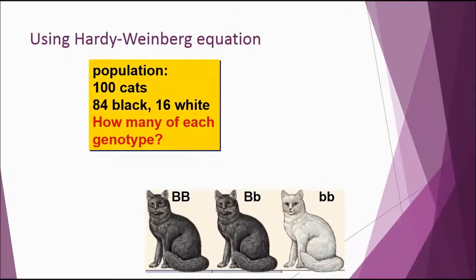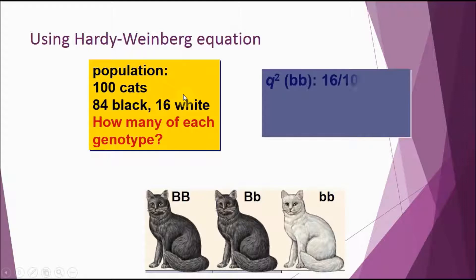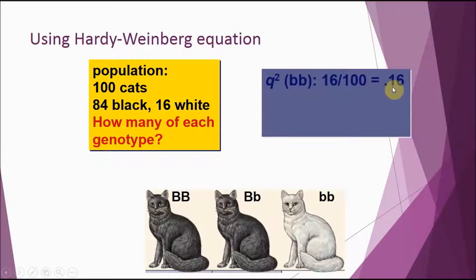Let's take a look at this example: in a population of 100 cats there are 84 black and 16 white. We'll assume that black is the dominant trait and white is the recessive. So our q squared — the frequency of the recessive phenotype — is 16 out of 100, or 0.16.